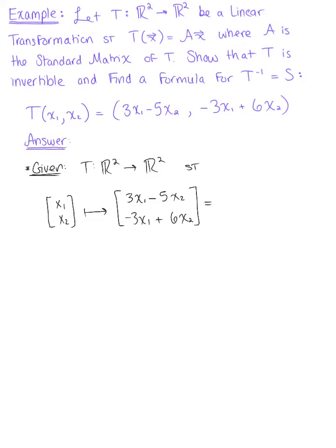And then breaking this down into the matrix times our vector, we have the standard matrix of T, [3, -5; -3, 6], multiplied by the vector x₁, x₂. And so we can see in looking at this that here is our standard matrix of T and here is our vector x.